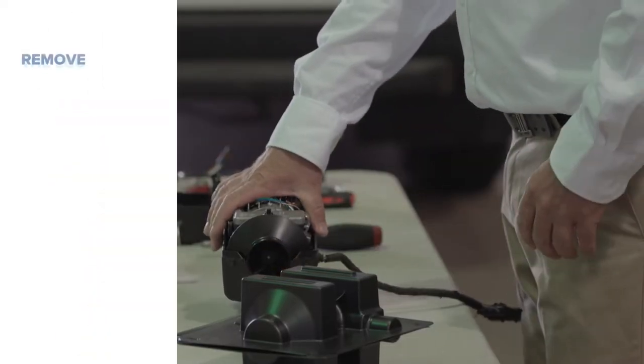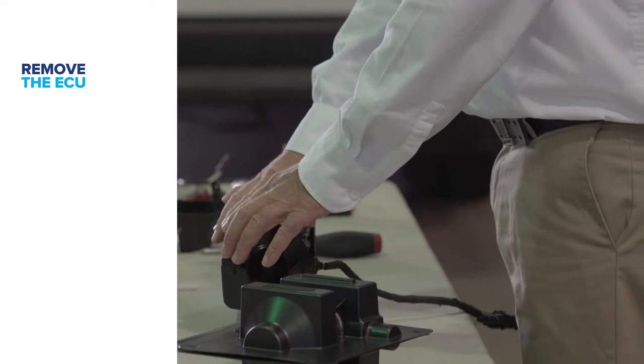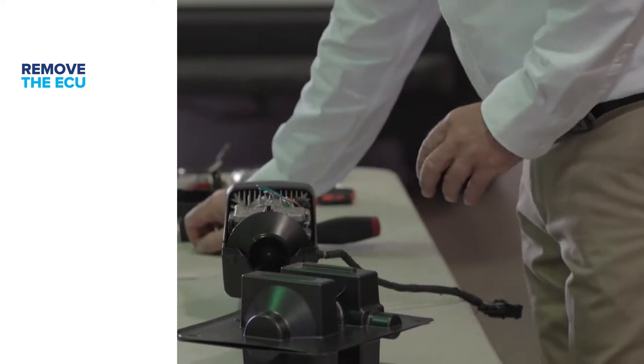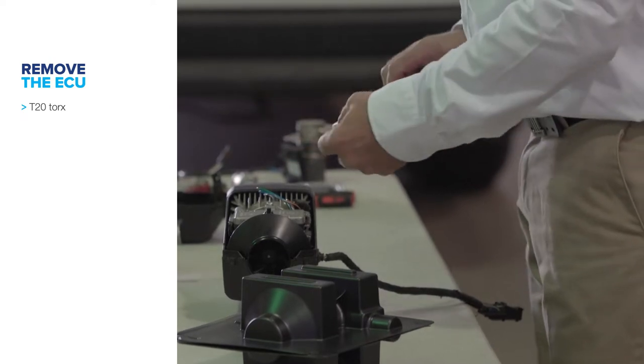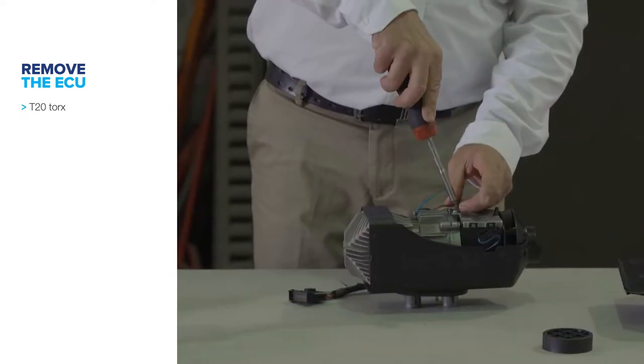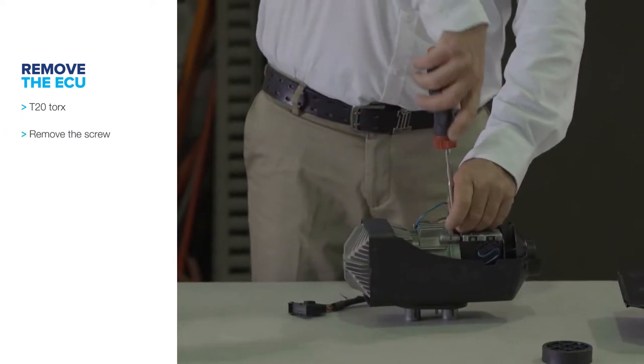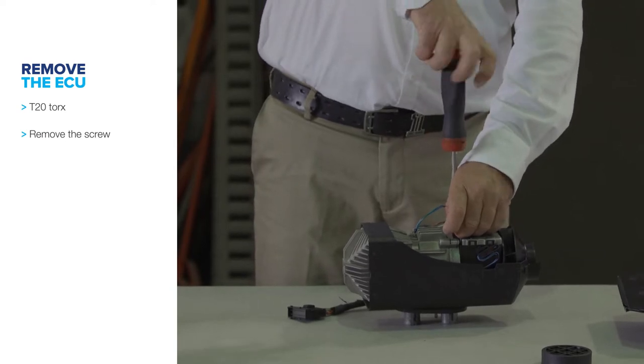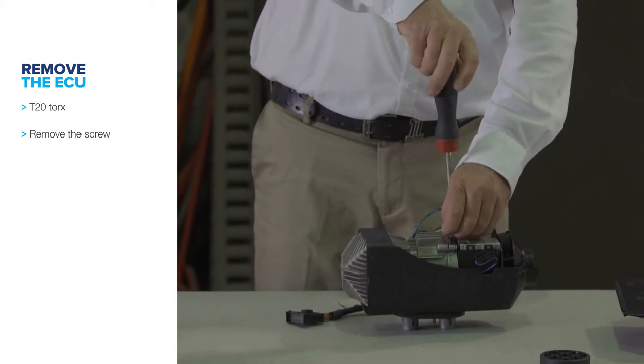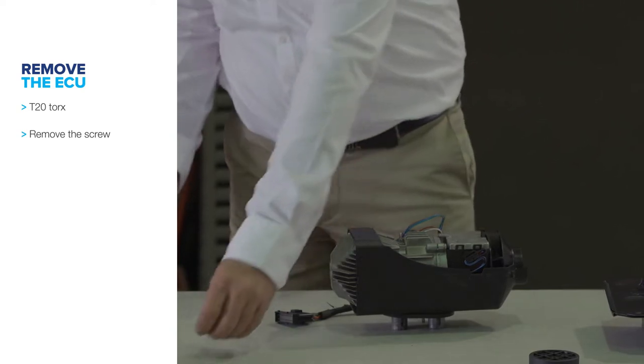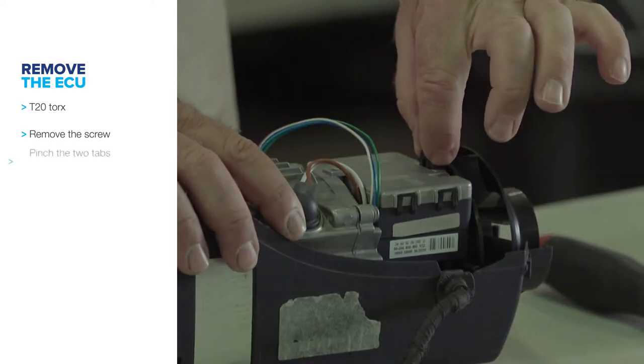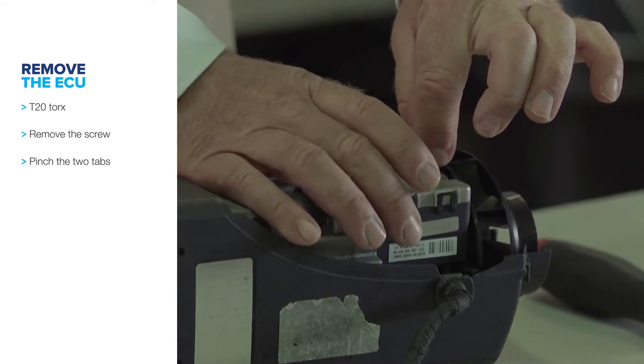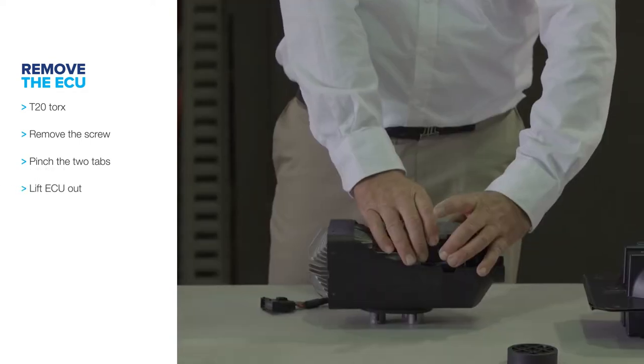At that point in time, we're going to need to remove the ECU. To remove the ECU, I'll take a T20 Torx, remove the screw out of the ECU, pinch the two tabs on the ECU, and lift it.